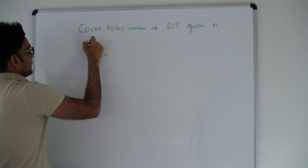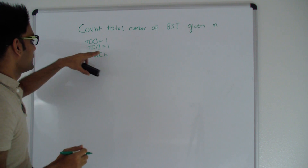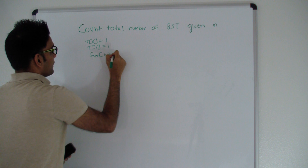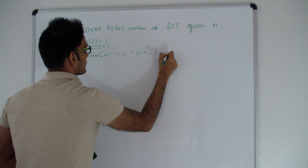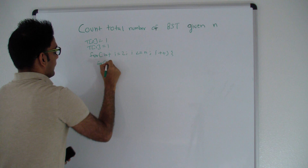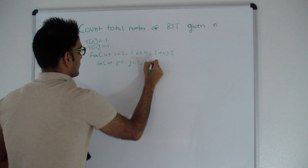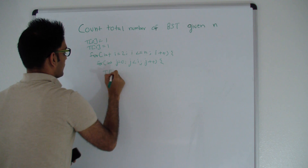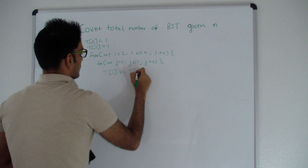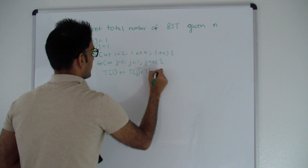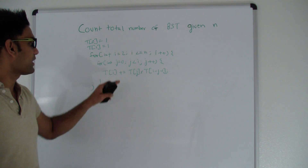Let's look at the code. We set initial values: T(0) = 1 and T(1) = 1. Then for i from 2 up to n, for j from 0 to i-1, we accumulate: T(i) += T(j) × T(i - j - 1). This computes the number of possible trees for every value of i.